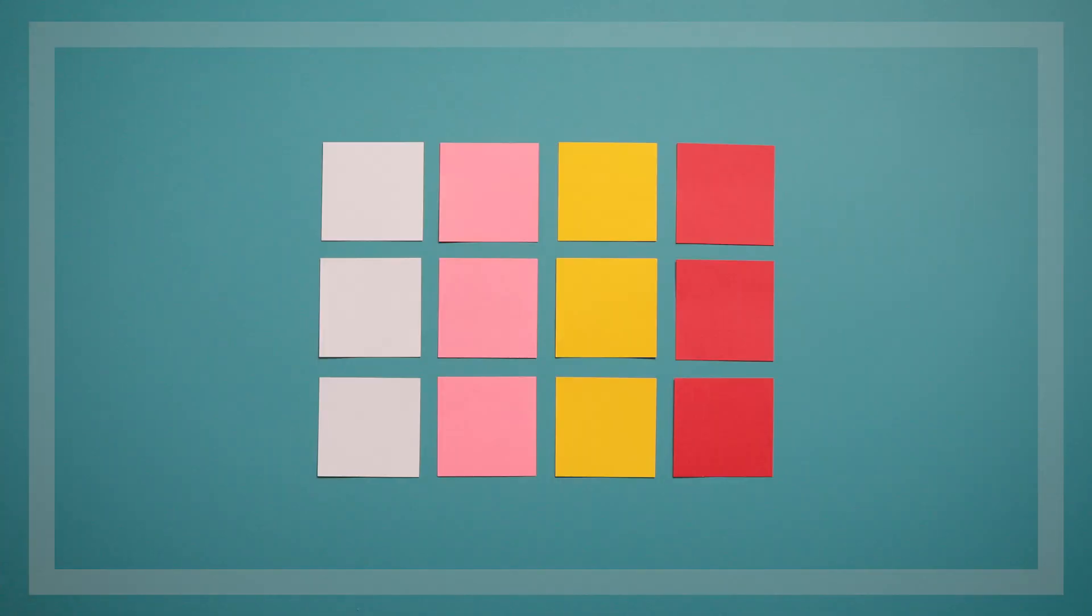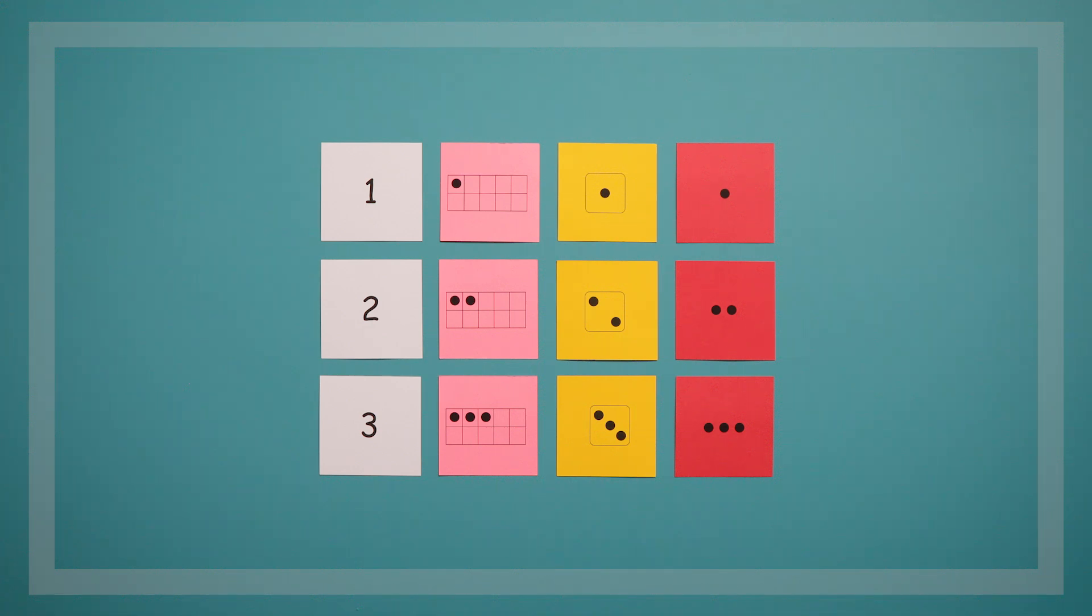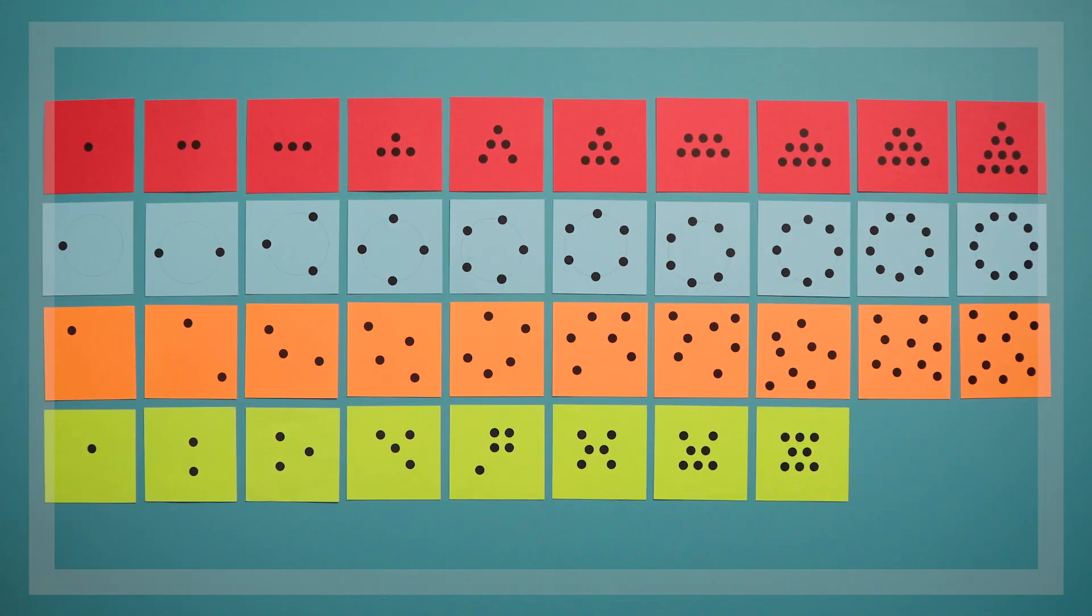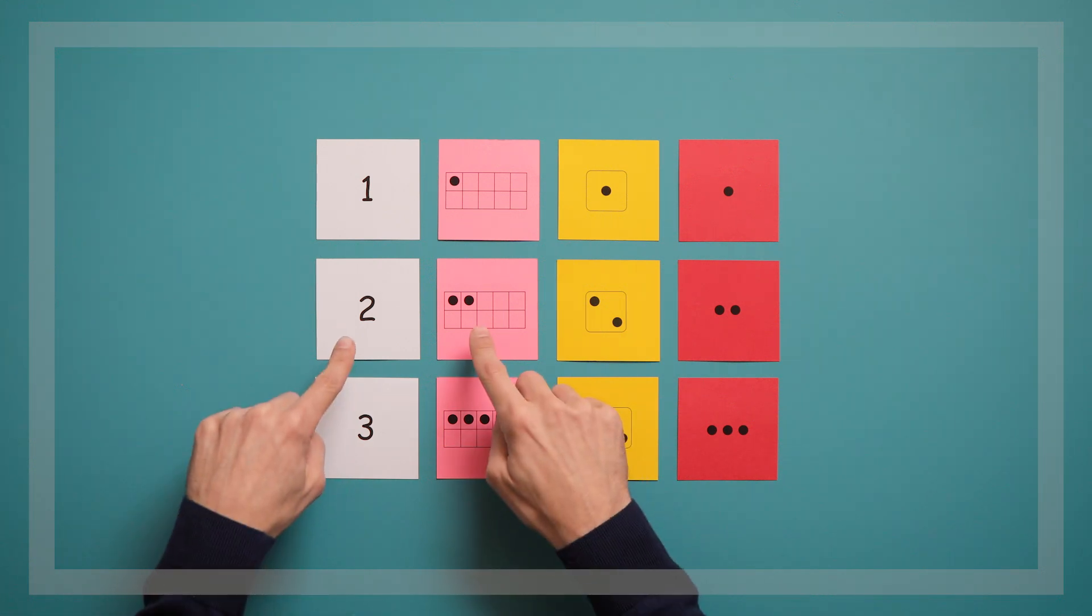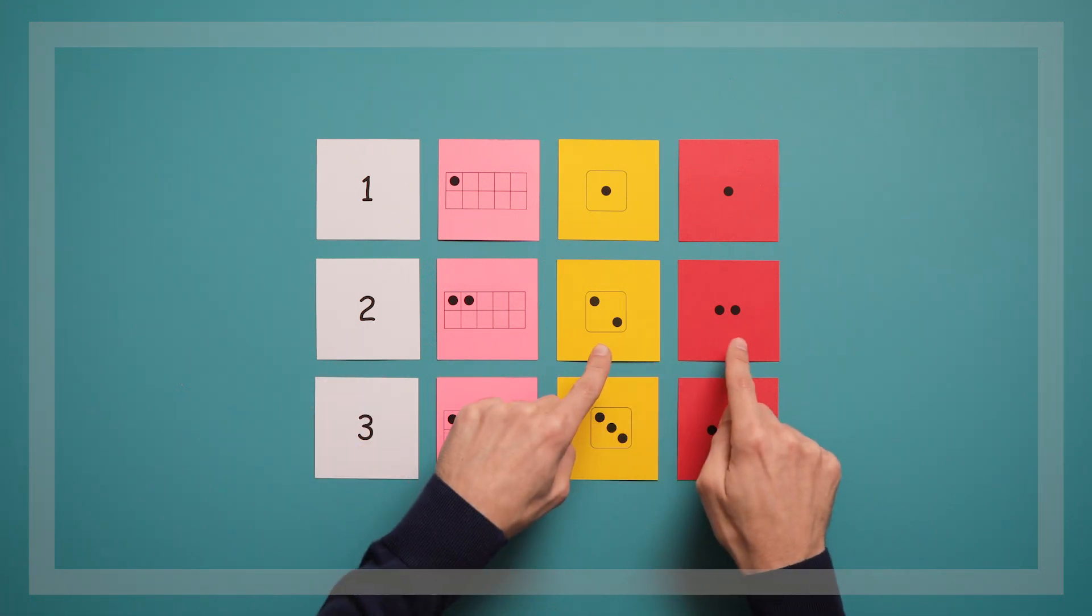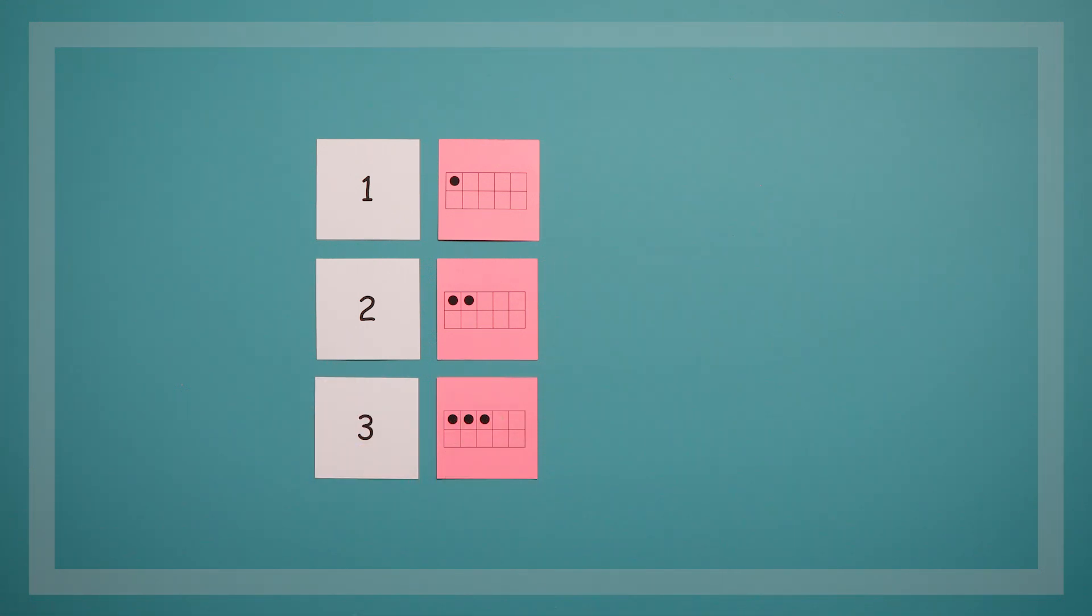Here we'll start with the 1-3 numeral, 10-frame, dice, and ordered dot cards, but you can include any cards that you think children are ready for. An important part of setting up this game is that you need to make sure you have pairs of cards, otherwise you'll end up with cards that don't have matches.